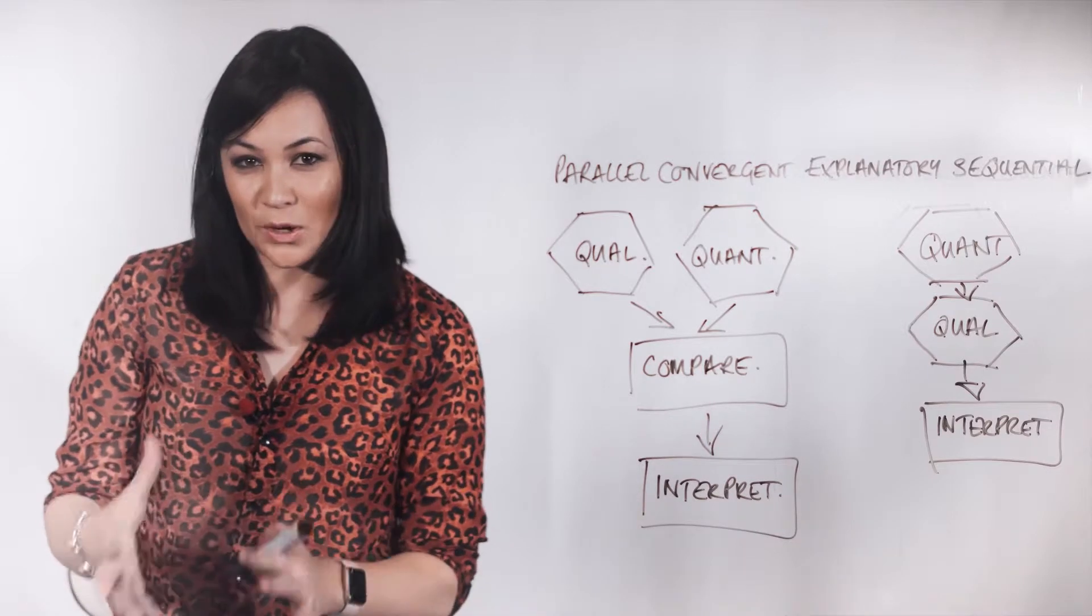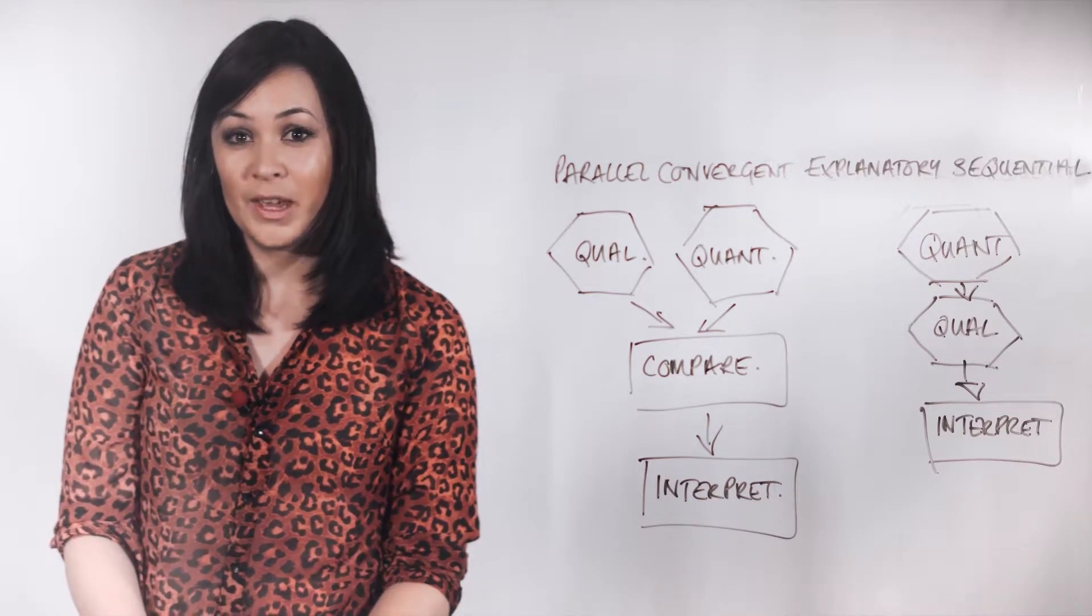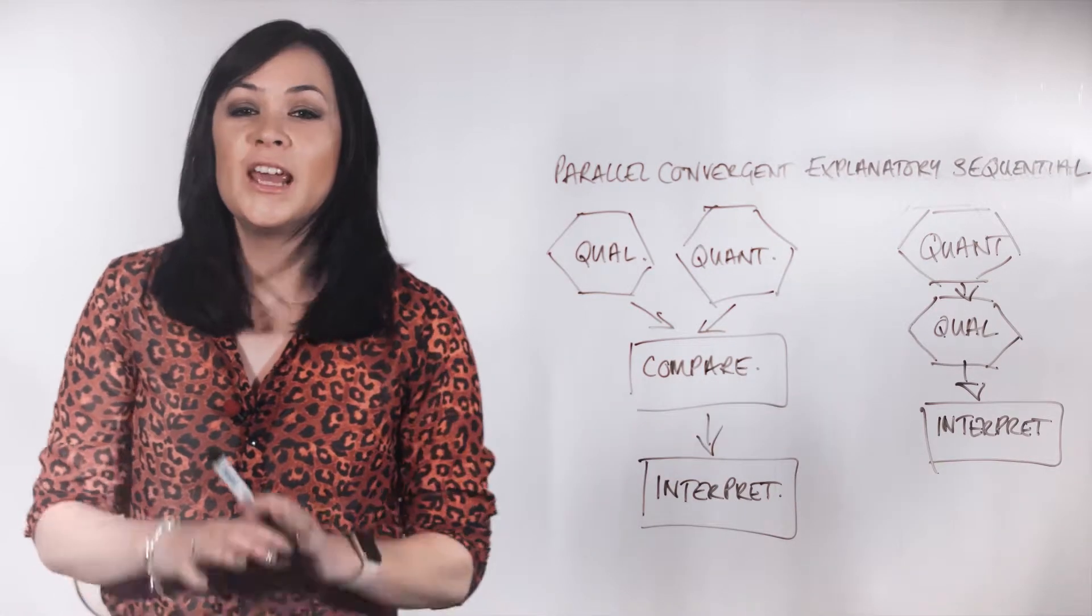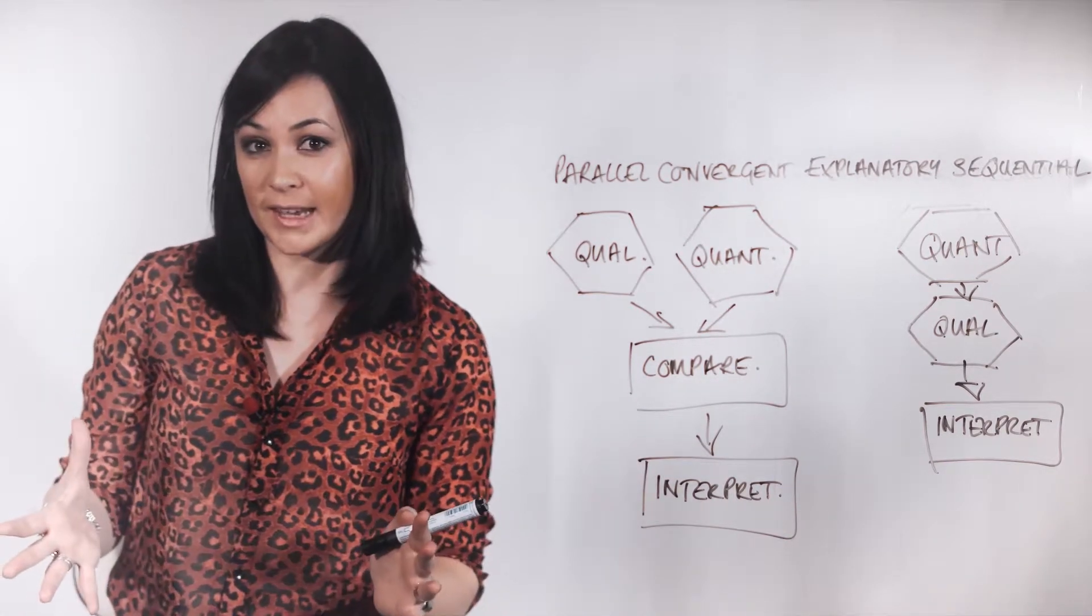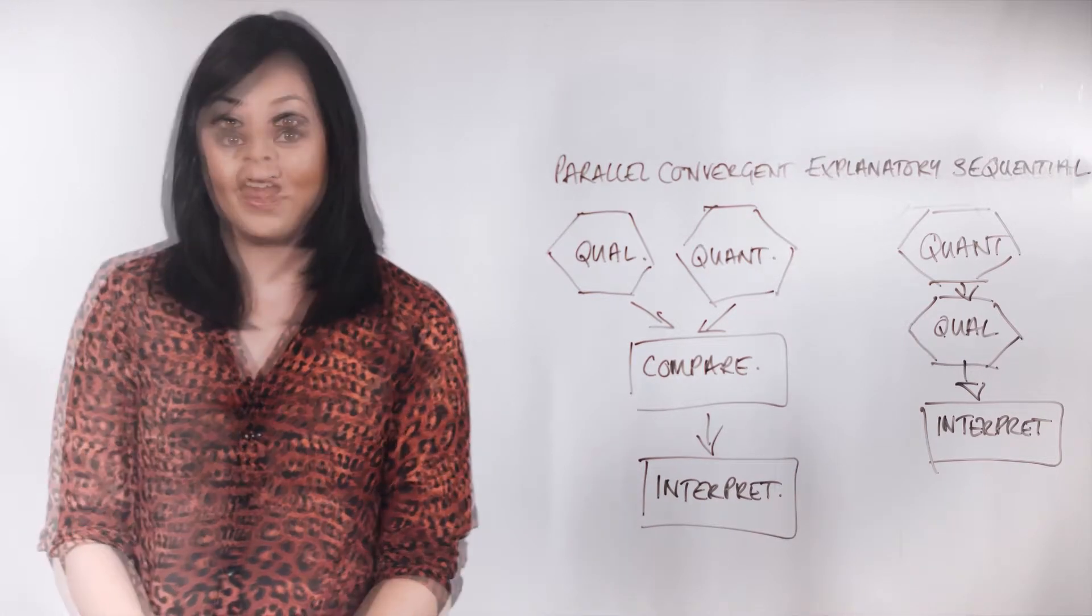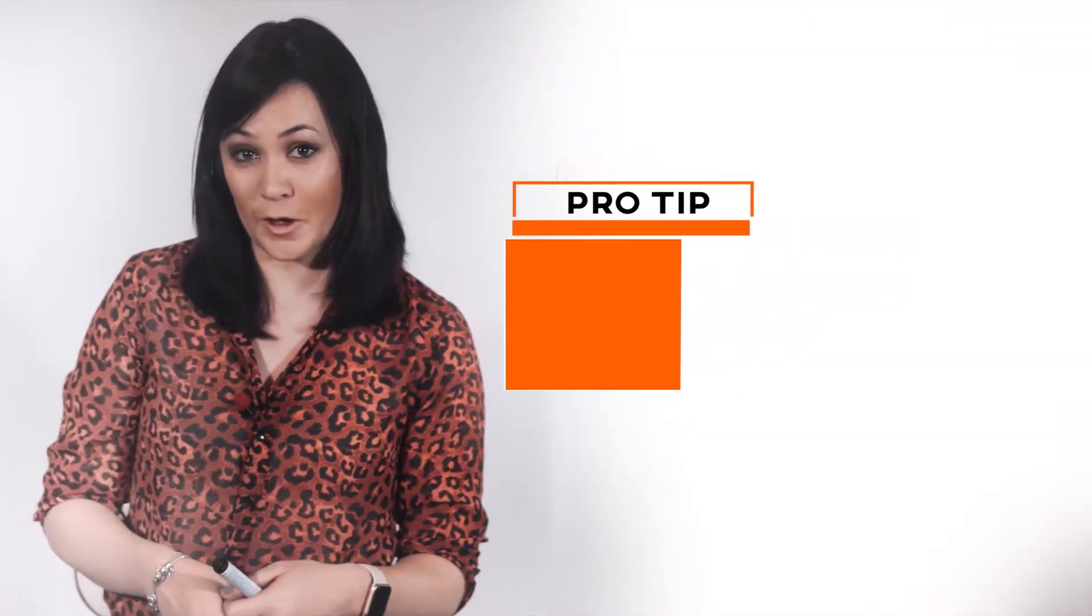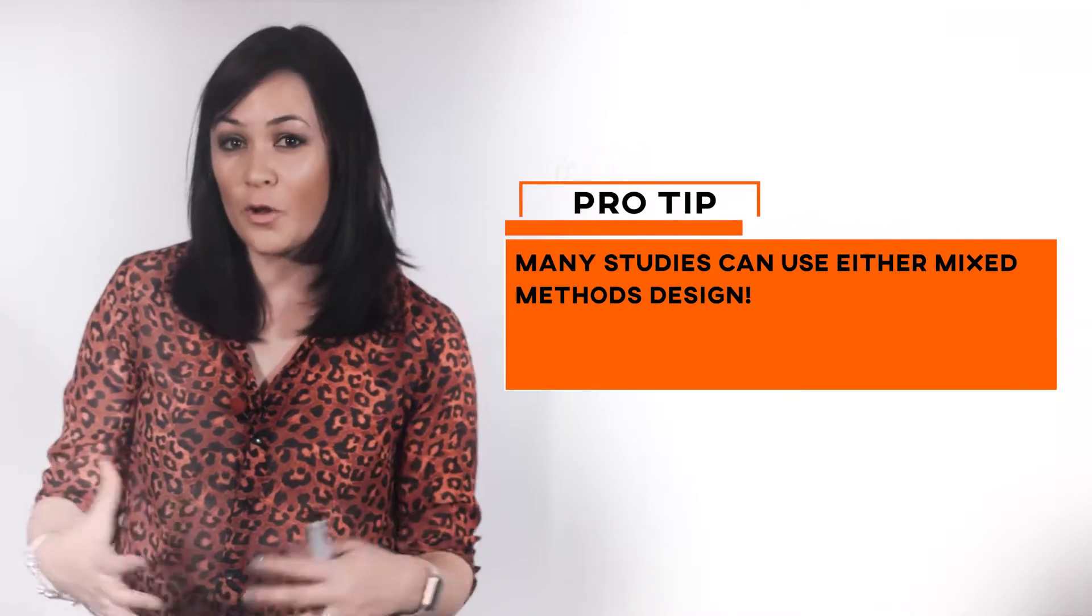The explanatory sequential mixed methods approach, however, sequences your quantitative and qualitative data collection in such a way that allows one phase of data collection to inform the next. This can either place the qualitative or quantitative phase of the study first, depending upon your overall aims.